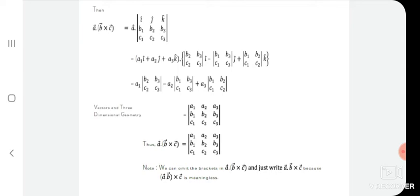Regarding the physical significance of the scalar triple product formula: it represents the volume of the parallelepiped whose three co-terminus edges represent the three vectors a, b, and c. It gives the volume of a parallelepiped.